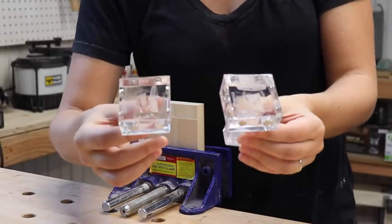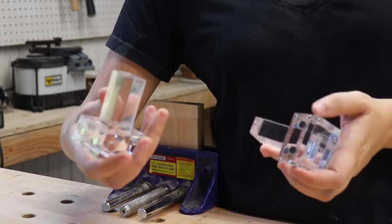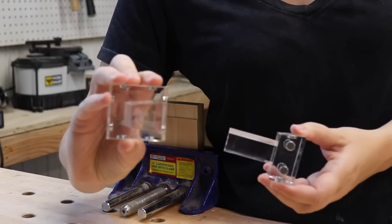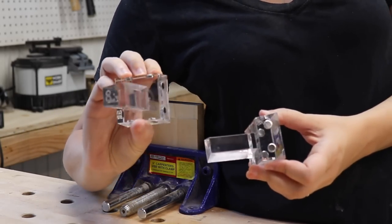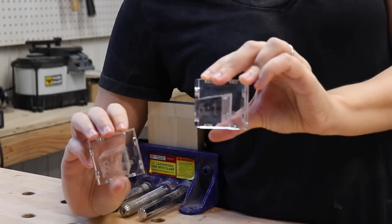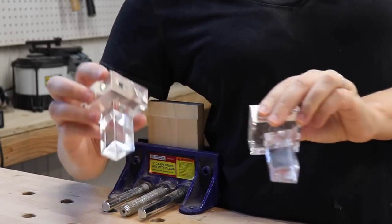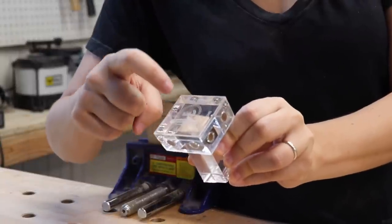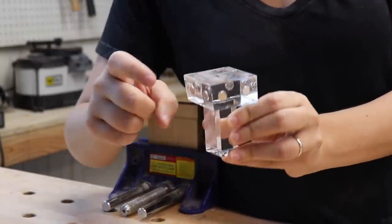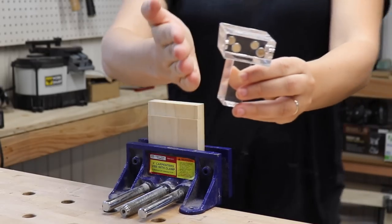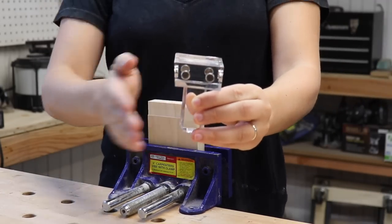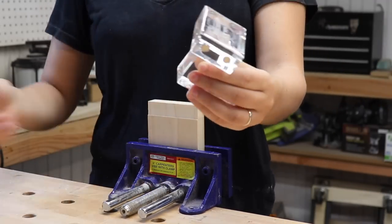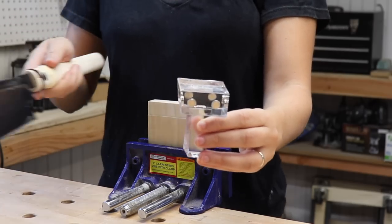So these dovetail jigs are super cool. They come in different ratios. So this one is an eight to one ratio, and this one is a six to one. So the angles are completely built into the jig. It's all marked: tails, pins, shoulder, pins.